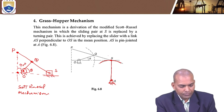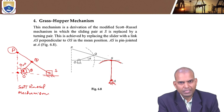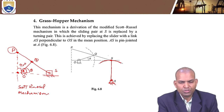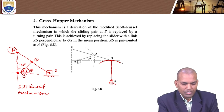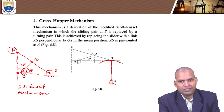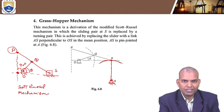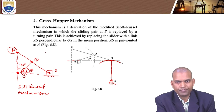The objective of this straight line motion mechanism is that the motion or path of point P should remain the same. The projection of point P should remain unchanged. Even though the sliding pair is replaced by a turning pair, the mechanism is made such that the motion of point P is perpendicular to the extension O.